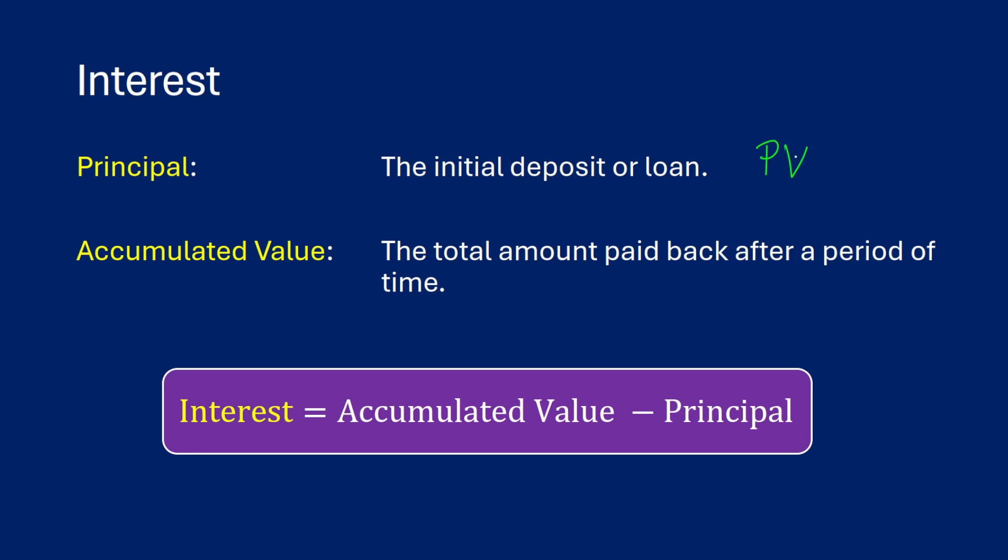And the accumulated value is going to be the total amount that's paid back after some period of time, whatever we say that that period of time is. So we can think of this as the future value. In general, the interest is going to be your accumulated value minus your principal. In other words, how much did you gain over that period of time?